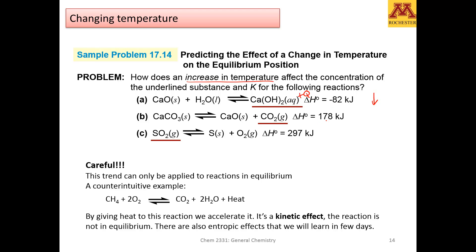In case B, ΔH is positive, therefore it's endothermic, meaning heat is a reactant. If you increase the temperature, the reaction will try to diminish that effect by consuming the heat, so it will move to the right. You will be creating CO₂, so the concentration of CO₂ will increase, and the concentration of calcium oxide will decrease.